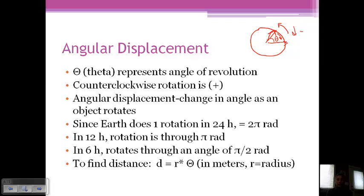So if you want to find the distance that an object has traveled through this angle, it's equal to r times theta, where r is your radius and then theta is your angle. And so this unit would also be reported in meters.